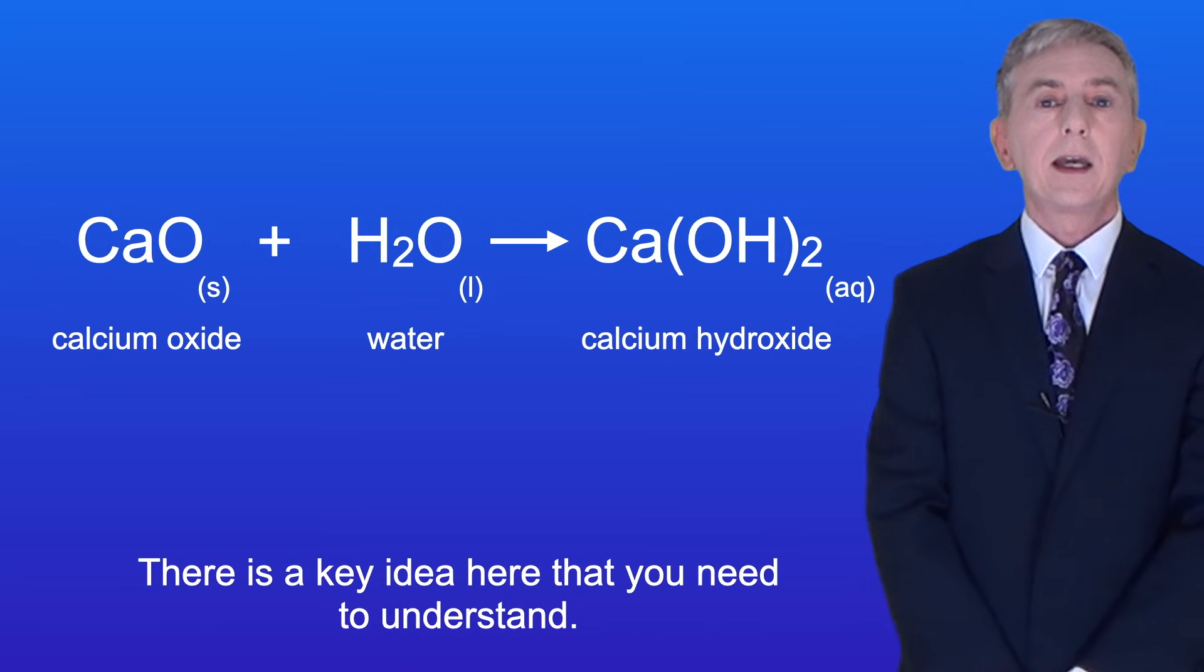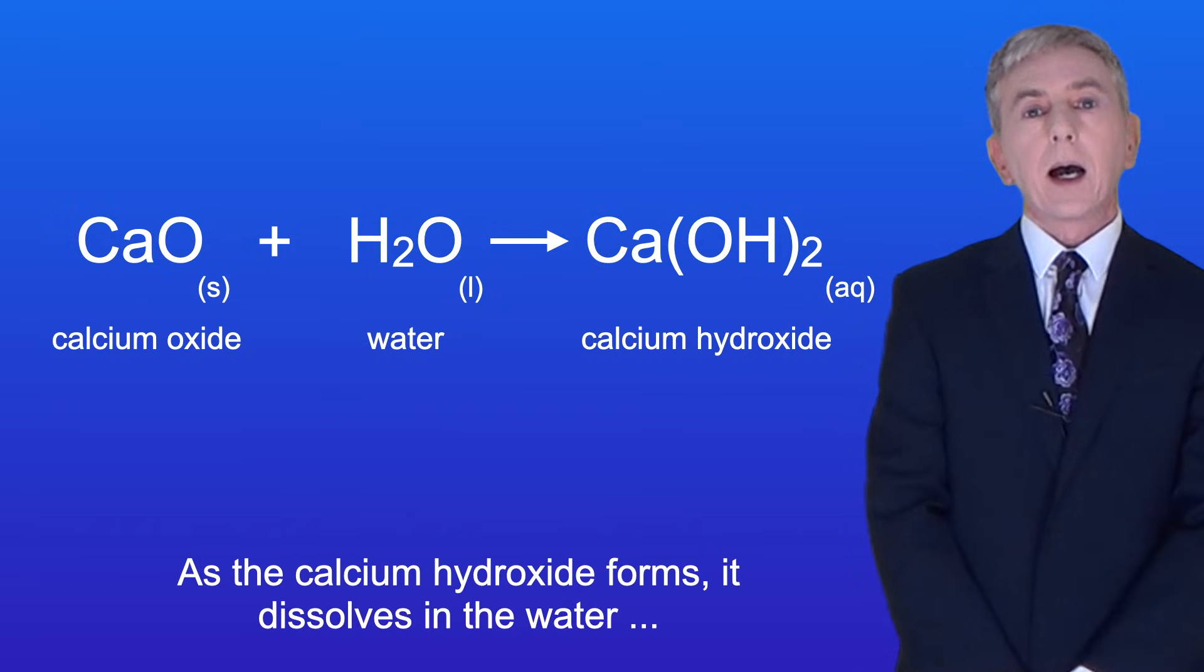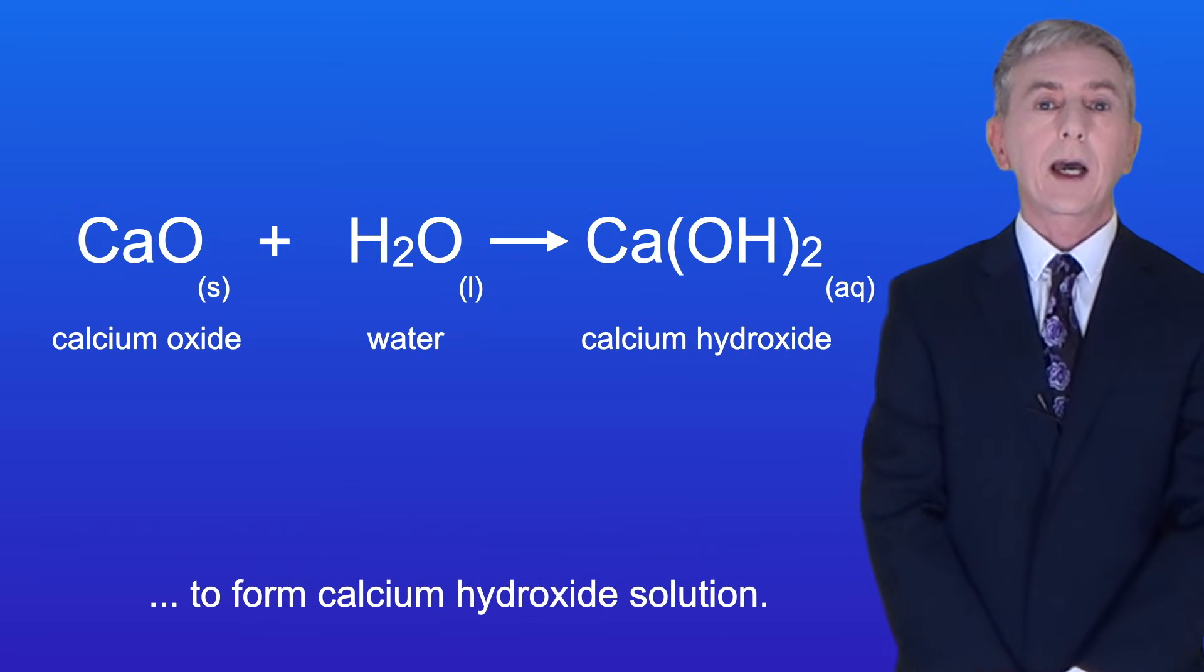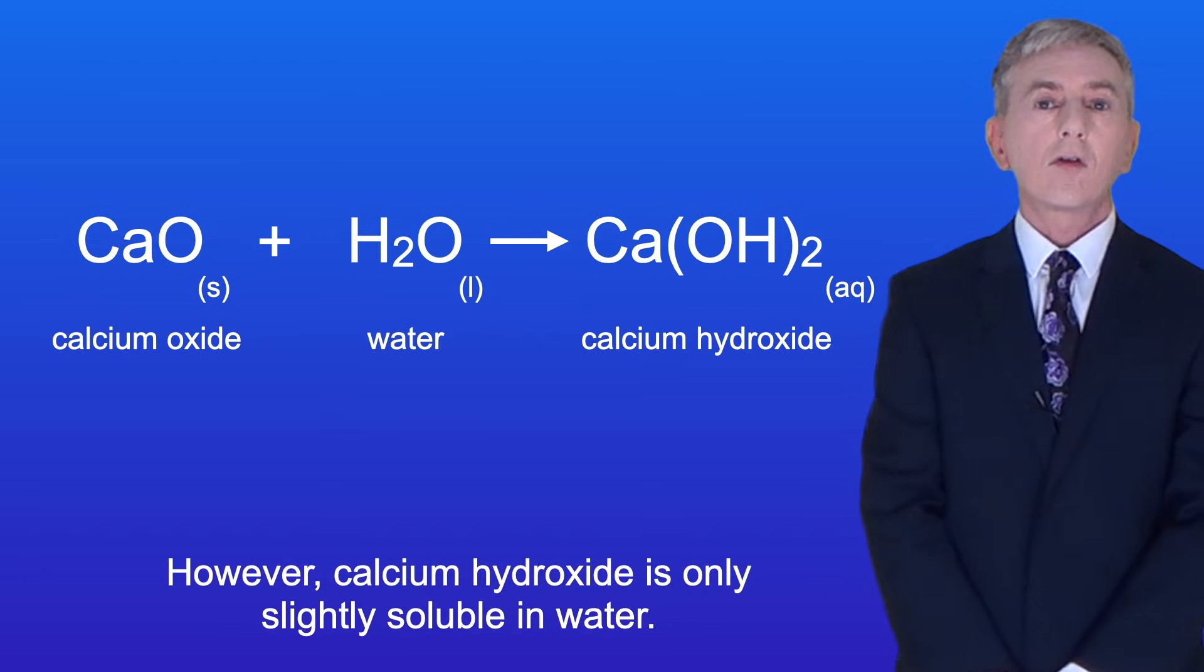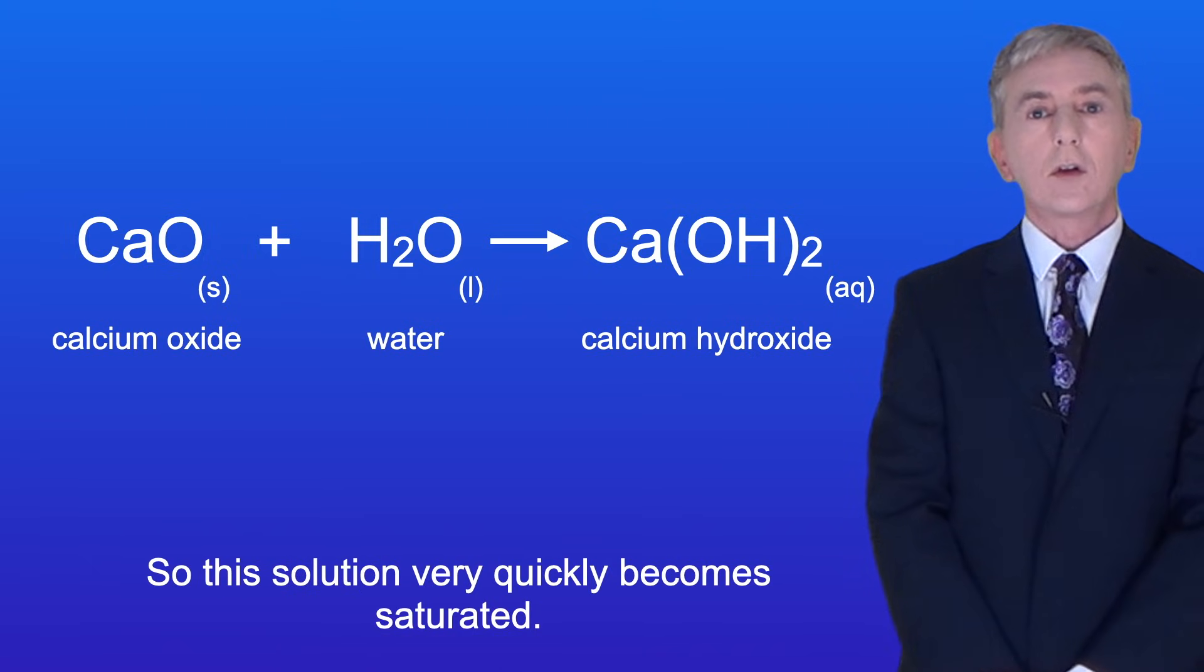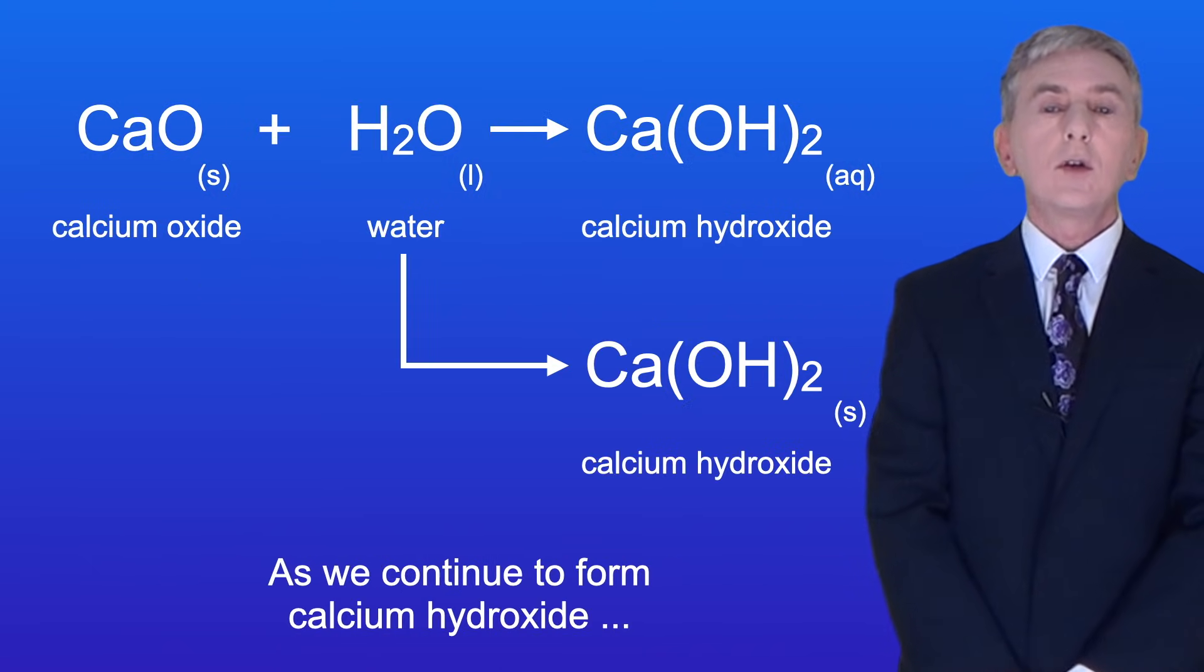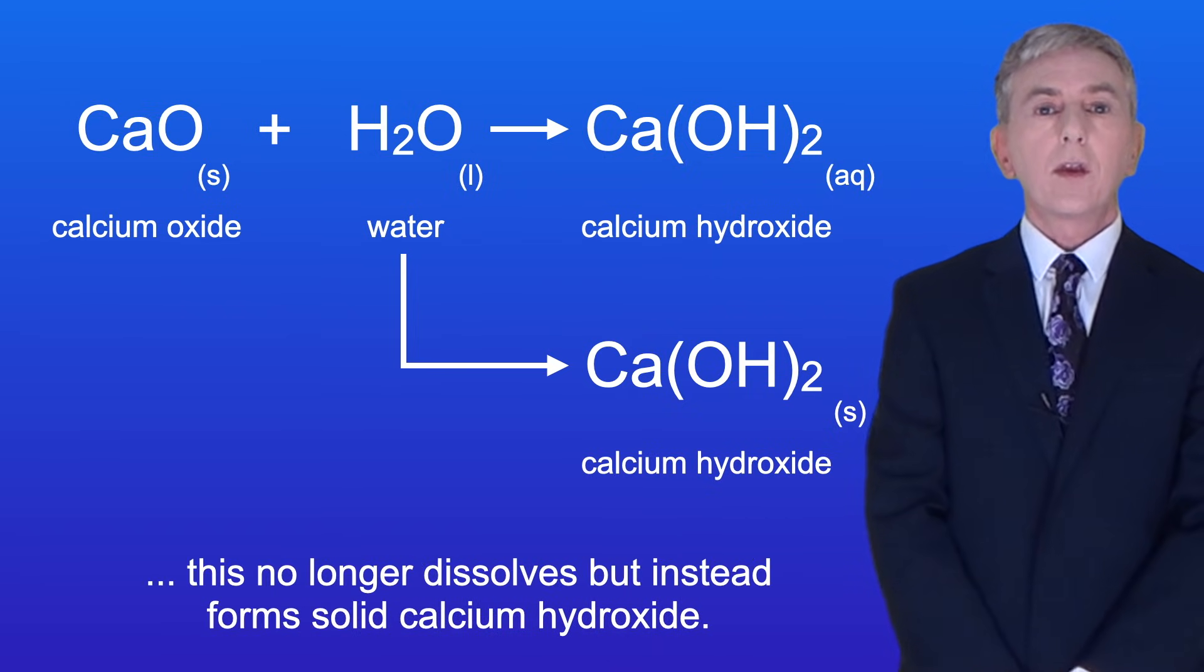Now there's a key idea here that you need to understand. As the calcium hydroxide forms, it dissolves in the water to form calcium hydroxide solution. However, calcium hydroxide is only slightly soluble in water, so this solution very quickly becomes saturated. As we continue to form calcium hydroxide, this no longer dissolves but instead forms solid calcium hydroxide.